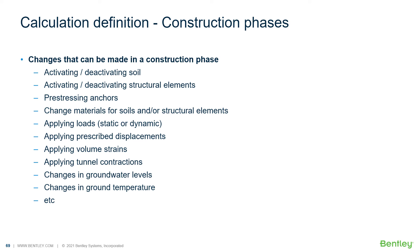There are many changes we can make in any construction phase: we can activate or reactivate soil and structural elements, pre-stress anchors, change materials for soil or structural elements when stiffness or strength properties change — for example during soil improvement where we switch from one material to another. We can also apply loads and prescribed displacements, prescribe volume strains for volumes, change groundwater levels, and change ground temperature.